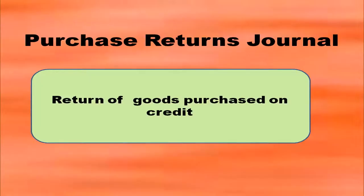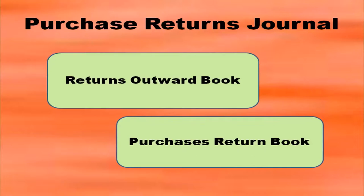Purchase returns journal: return of goods purchased on credit will be recorded in the purchases returns journal. Purchases returns journal is also known as returns outward book — whatever came inside is being returned, so returning outward. It is also known as purchases returns book.